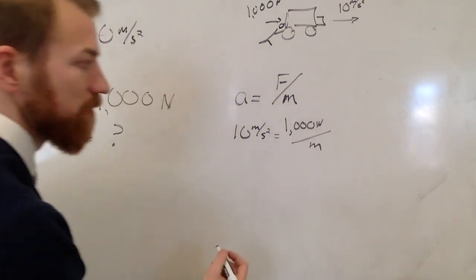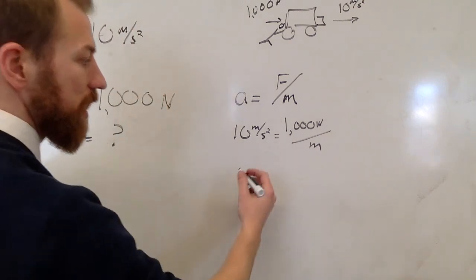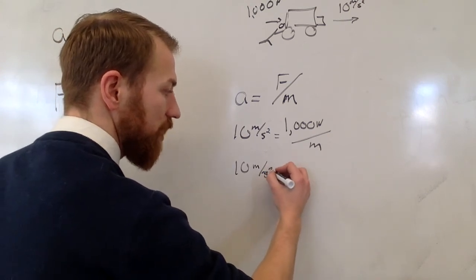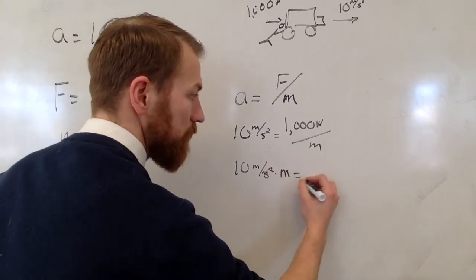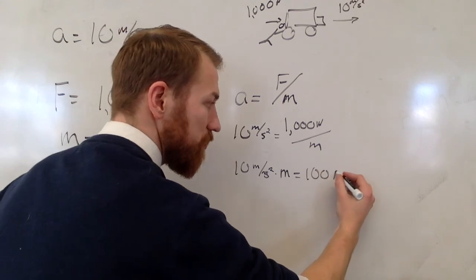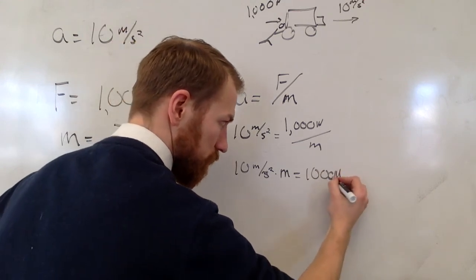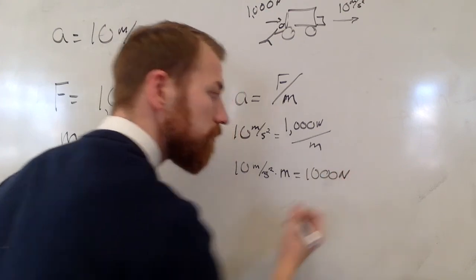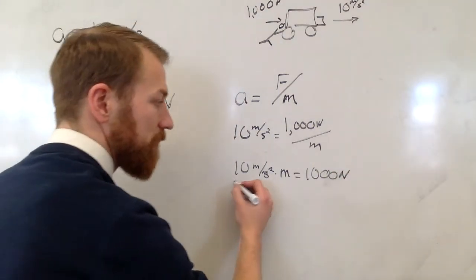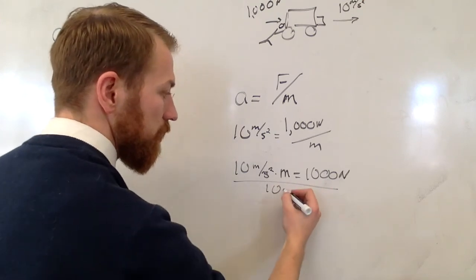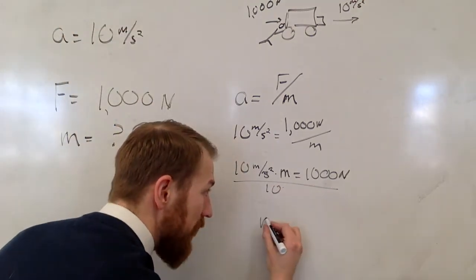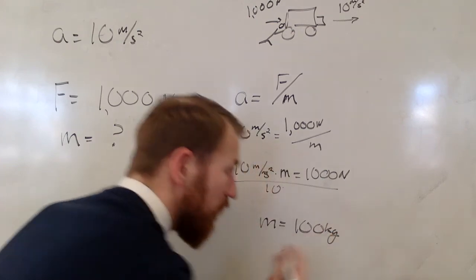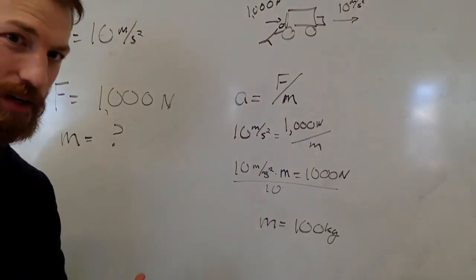Acceleration is 10 meters per second squared over 1,000 newtons. Mass, I can multiply m by both sides and end up with 10 meters per second squared times m equals 1,000 newtons. And I divide both sides by 10, and I end up with a mass of 100 kilograms. A fairly light moving truck, if you ask me.